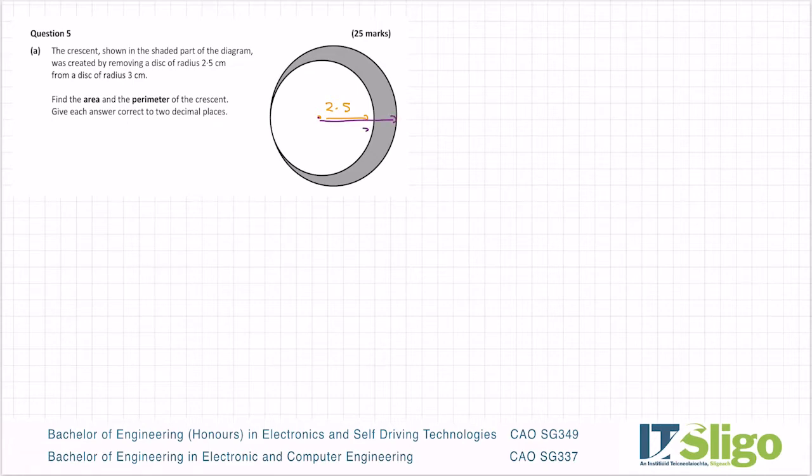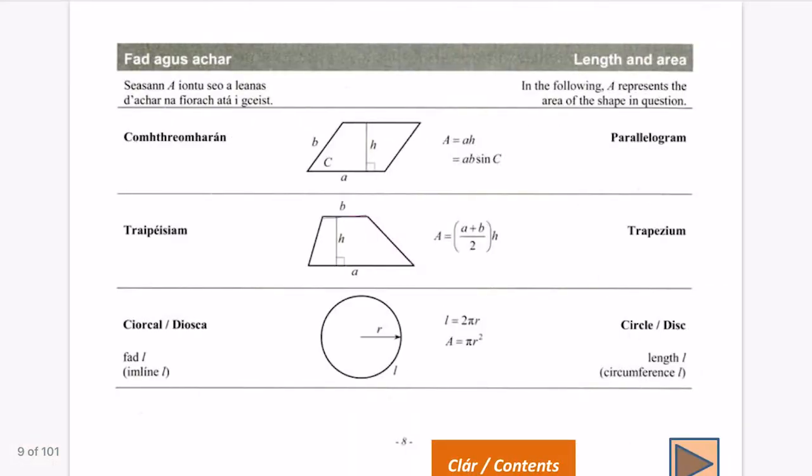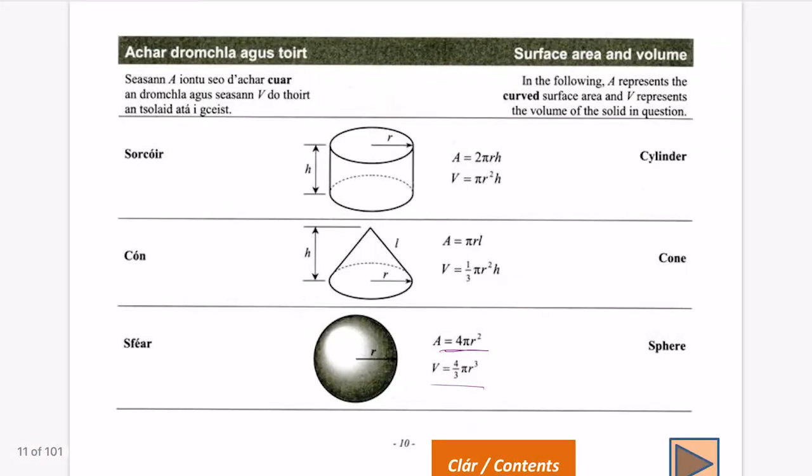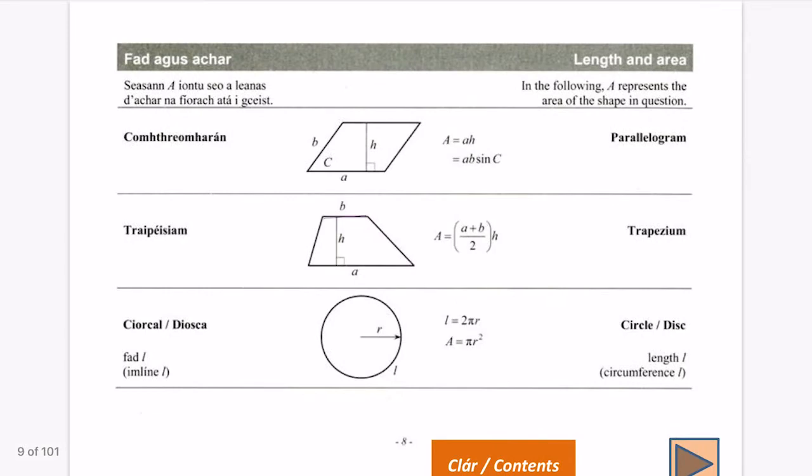Why the radius? Well, if we're talking about area and perimeter of a circle, on your log tables the first few pages deal with length and area and surface area and volume. They don't do square and rectangle; they assume you know them. So they do parallelogram, trapezium, and here is your circle.